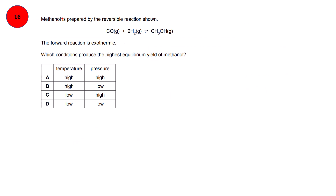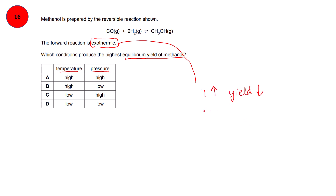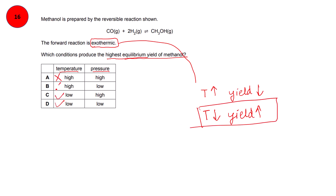Question 16: methanol is prepared by a reversible reaction, and the forward reaction is exothermic. Which conditions produce the highest equilibrium yield of methanol? The two factors to consider are temperature and pressure. For an exothermic reaction, increasing temperature decreases the yield, and low temperature gives more yield of the product. To produce the highest yield, temperature should be low — so eliminate options A and B.